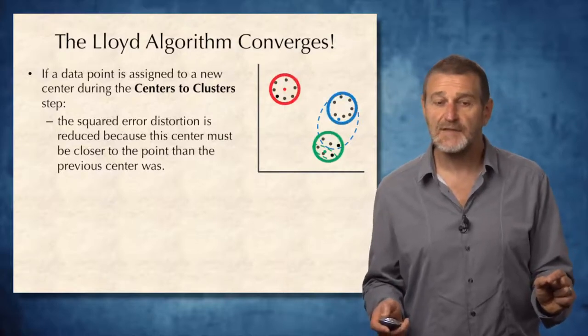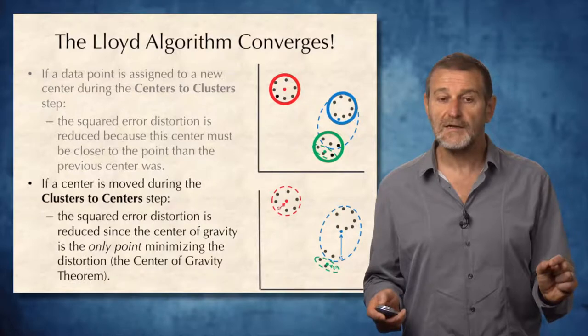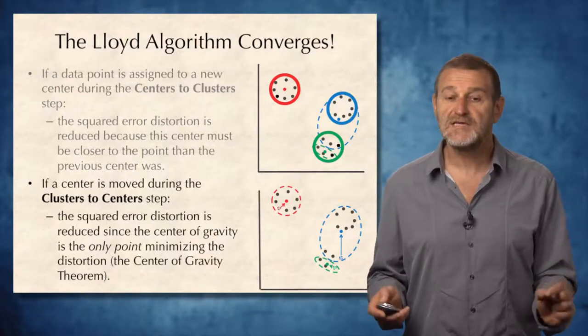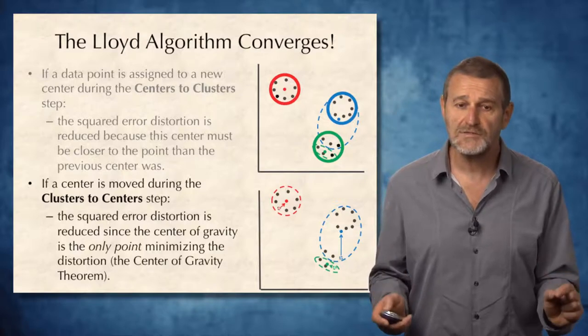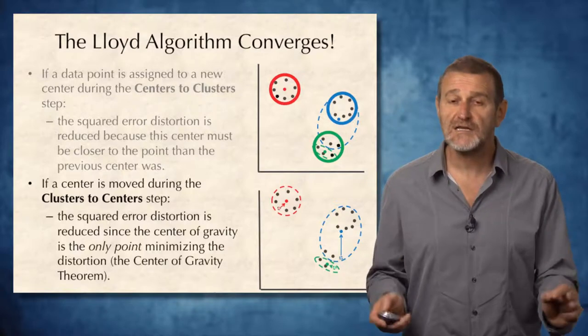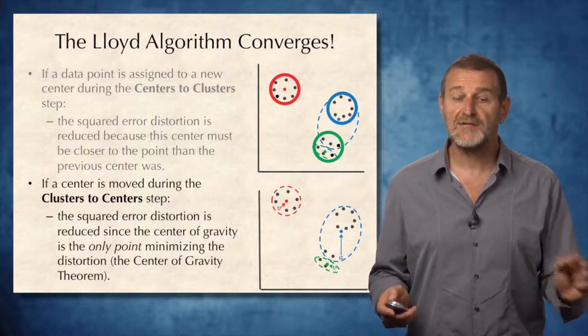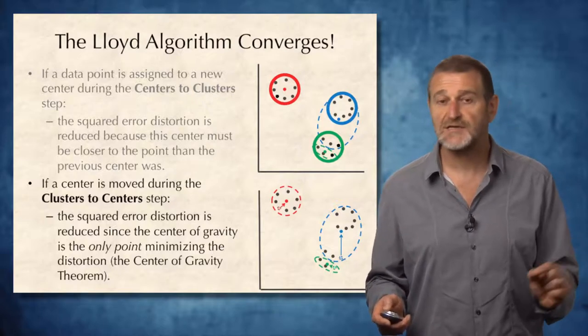On the other hand, if a center is moved during the clusters to centers step, then the squared error distortion is also reduced, since the center of gravity of the cluster is the only point that minimizes the distortion, by the center of gravity theorem.